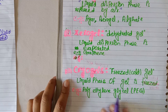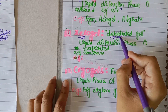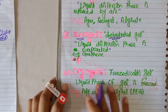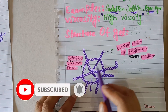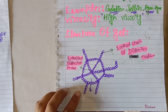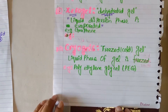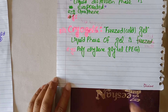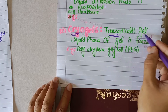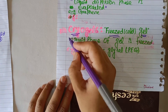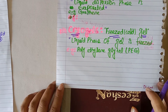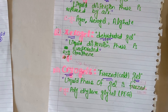Xerogels are gels in which the liquid dispersion phase is evaporated or dehydrated — "xero" means dehydrated. When the liquid phase is evaporated, we obtain xerogels. Finally, cryogels are gels in which the liquid phase is frozen or cooled — "cryo" represents cold or freeze. If the liquid phase of the gel is frozen, that particular type is called a cryogel. Hopefully you now have a basic idea of gels. Thank you.